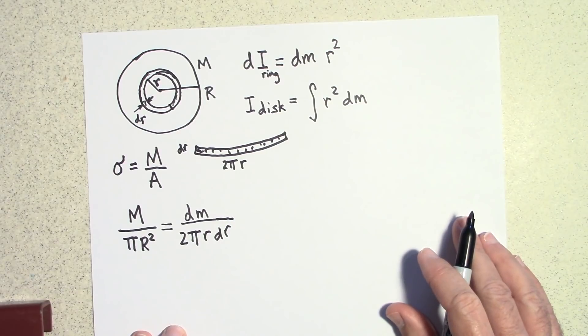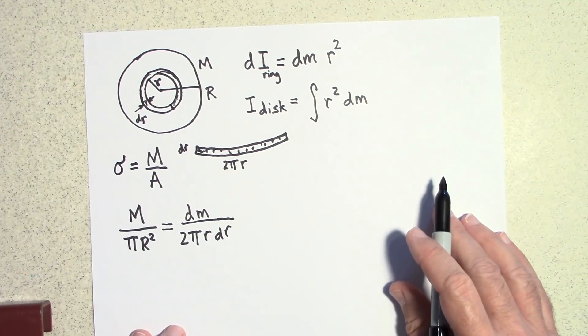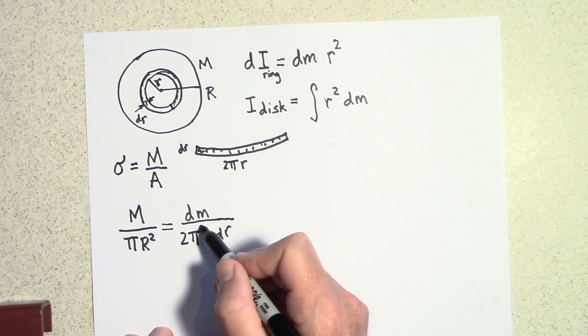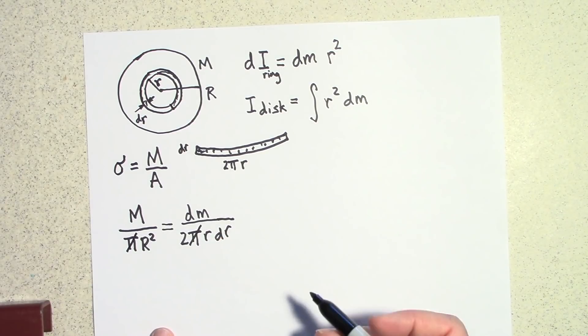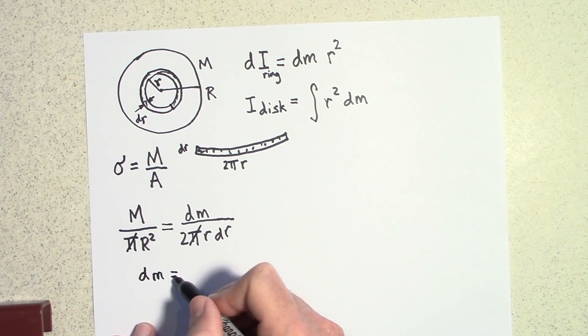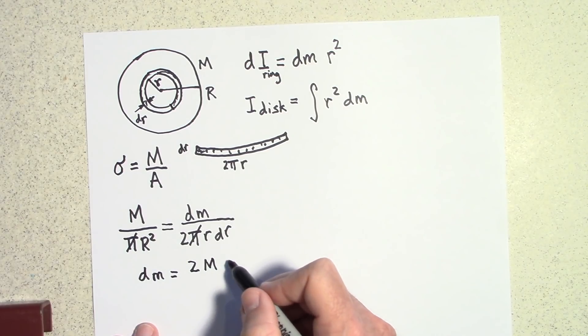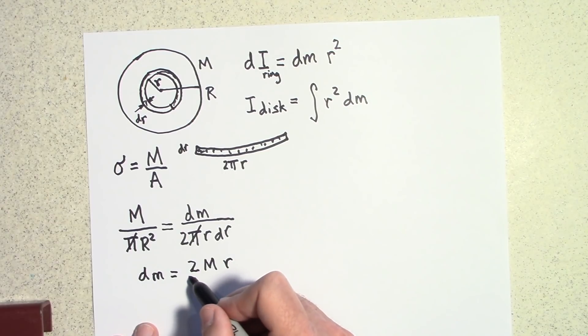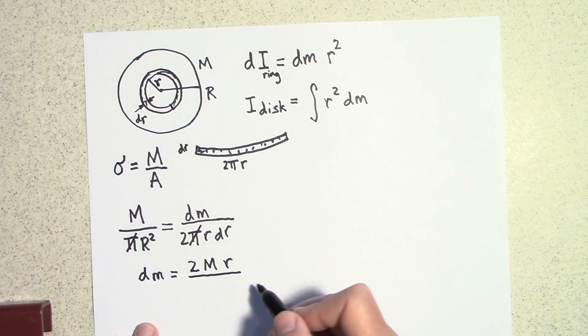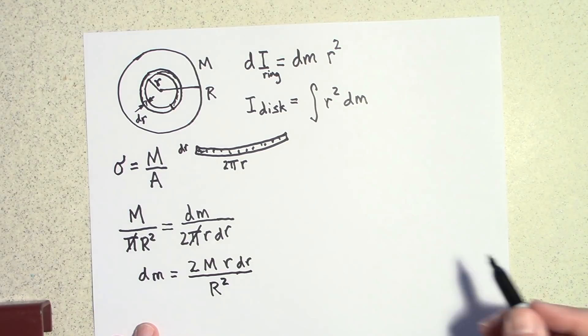There you have it. Okay, so now I'm going to solve for dm and I'm going to put it into there and then I'll solve my integral and I'll be done. So let's see. Let's get rid of a pi and then let's bring everything else over on the other side. So dm apparently, dm is equal to, there's a, let's see, 2m r dr all over capital R squared. That's what dm is equal to.